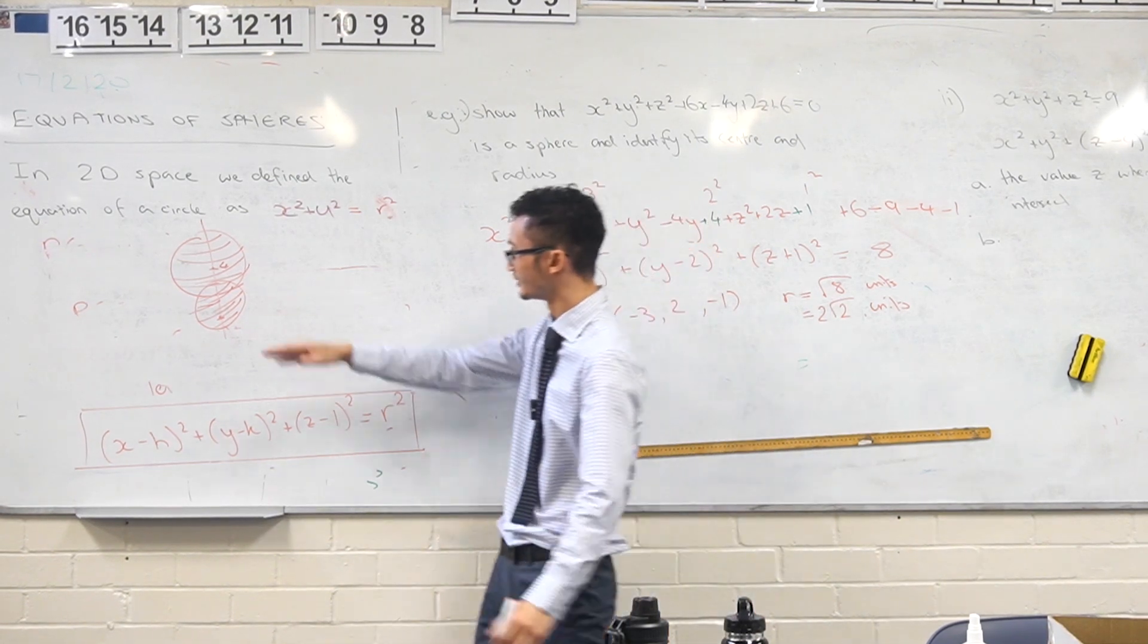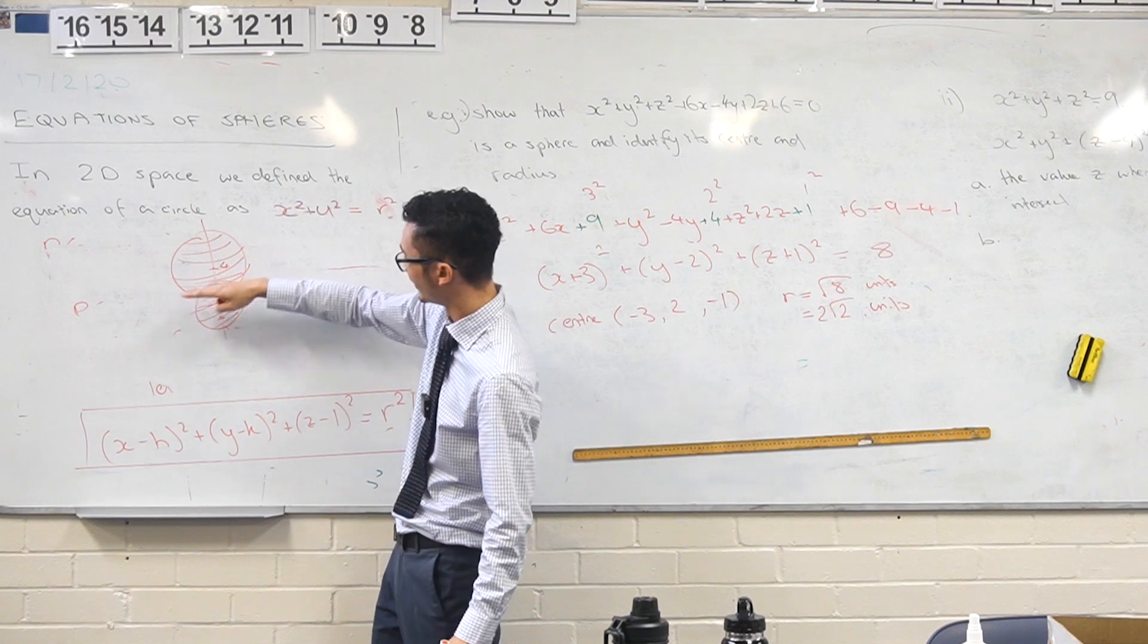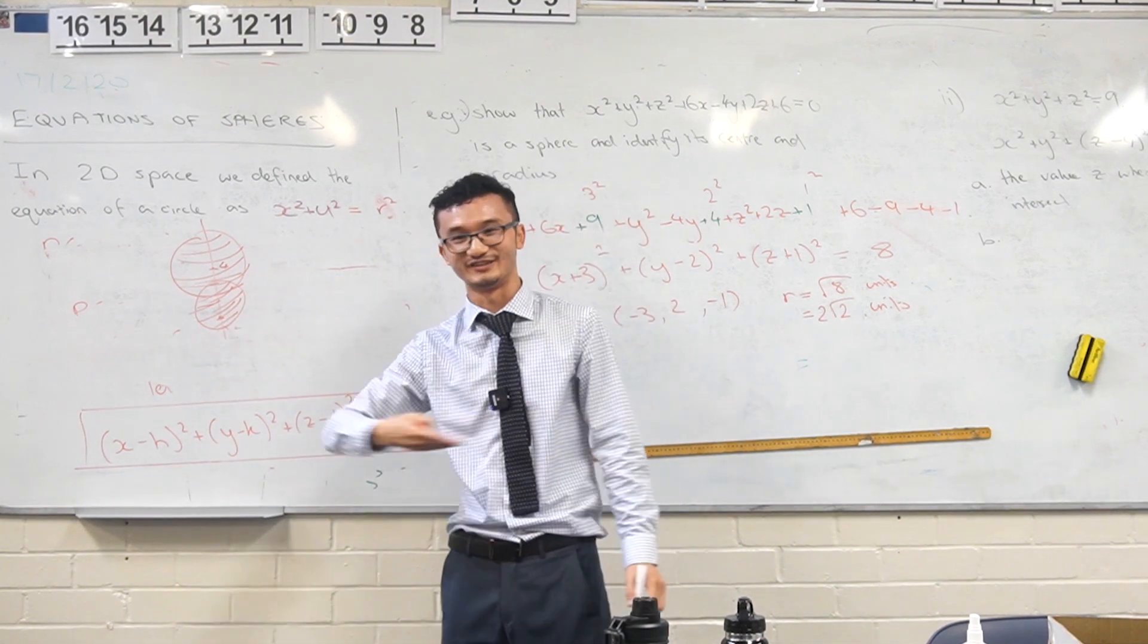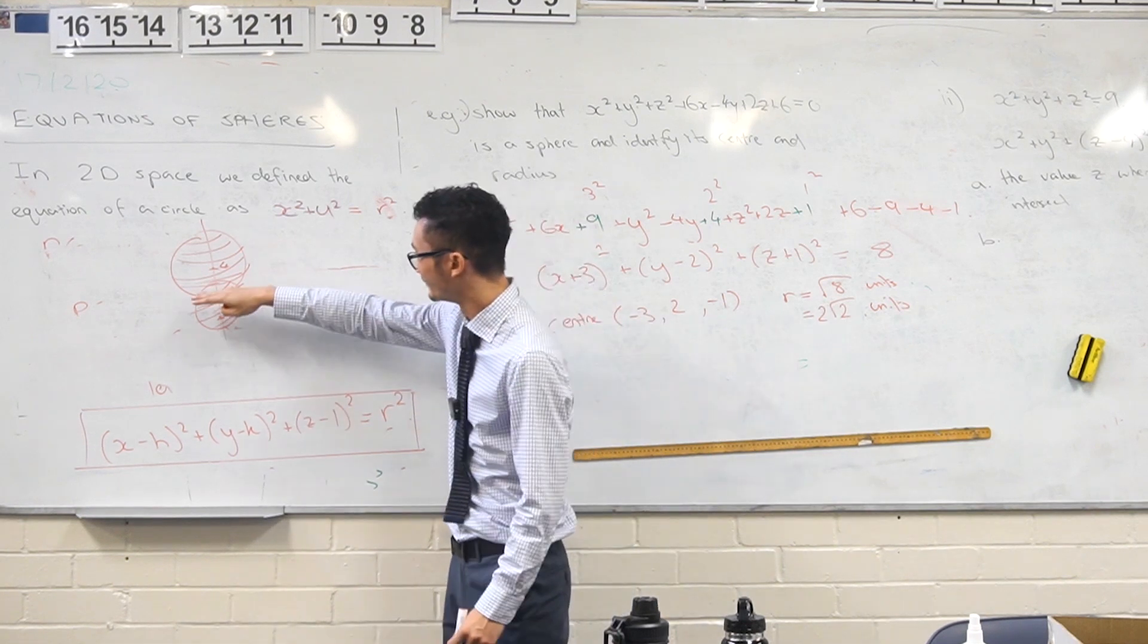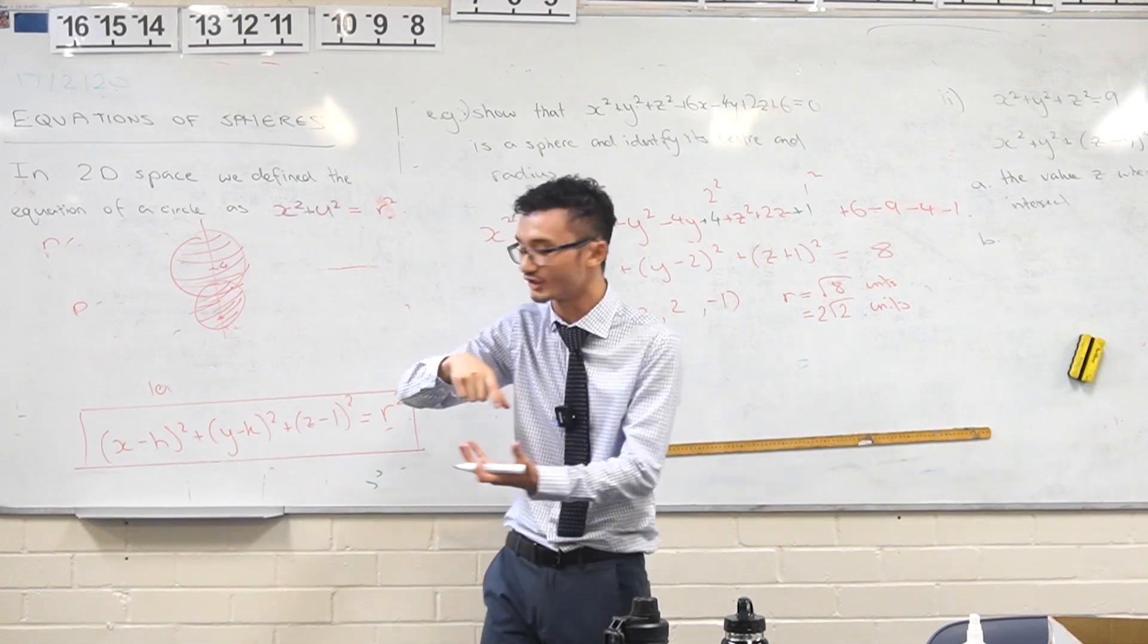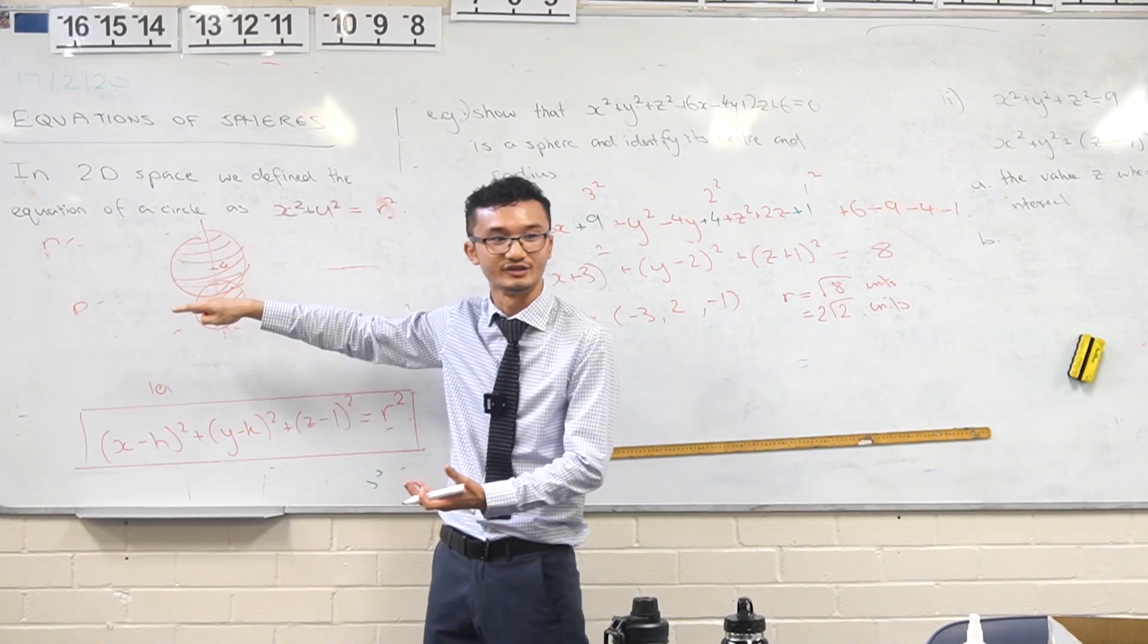It is actually going to be a circle, because if you cut this guy in half, it's like when you cut that orange—what are you looking at? You're looking at a circle, that cross section.